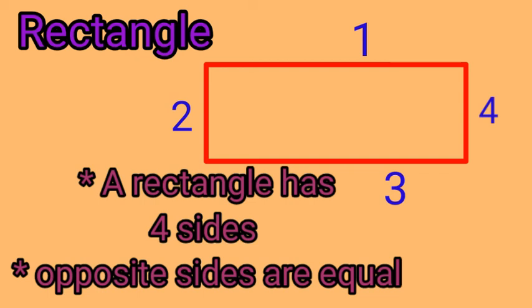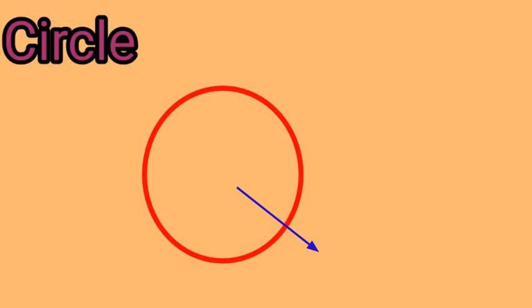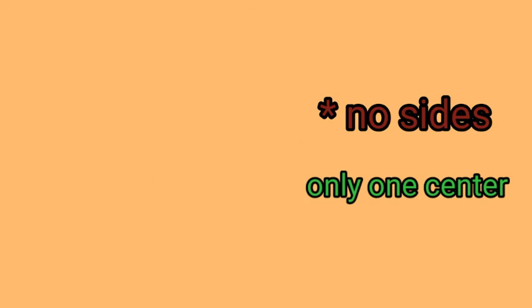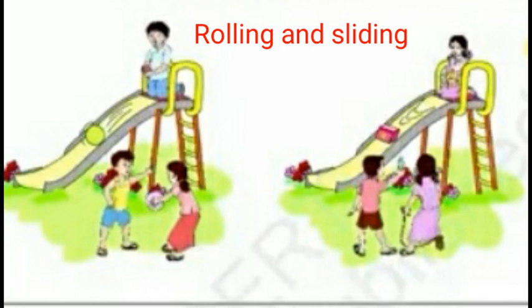Next shape: circle. Circle has only one center, no sides. Children, observe here.